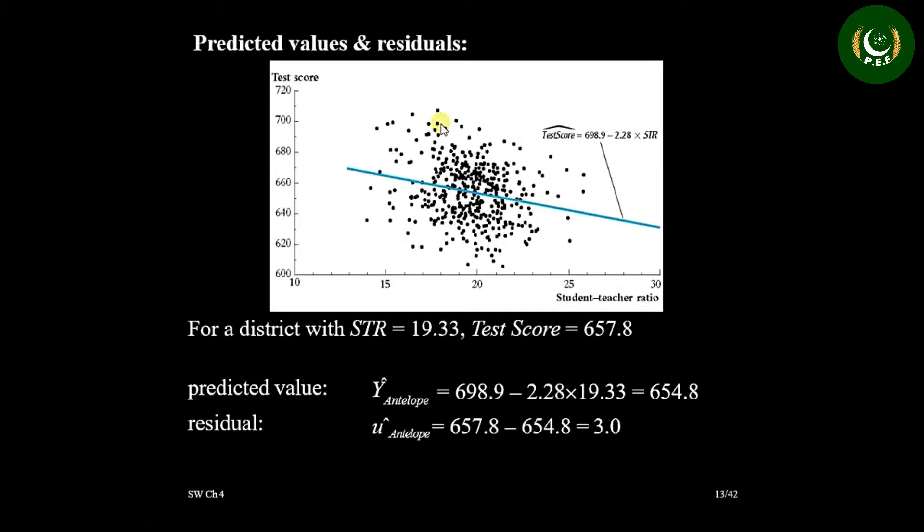Now, if for example, we have a district of the test score which is about 698.7 and class size 19.33, around here. You see, observed value is 19.33 and 657.8 but what is predicted value? Predicted value is here. This blue line. For this 19.33, our predicted value is 698.9 minus 2.28 into 19.33, 654.8. So you see this is 654.8, this is 657.8.